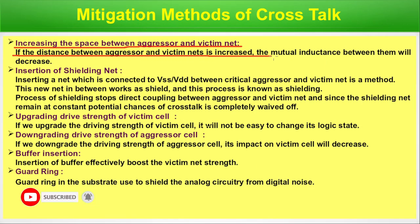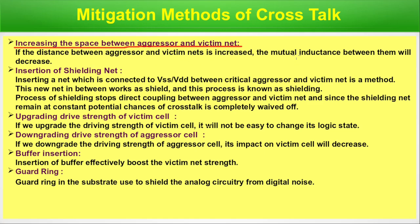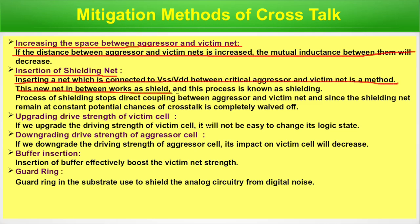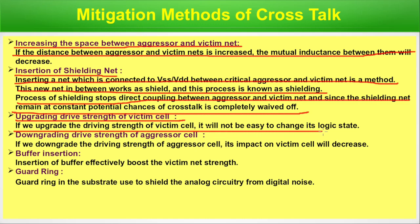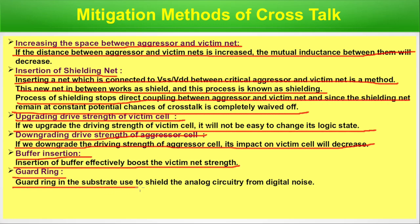Mitigation methods of crosstalk: (1) Increasing the space between aggressor and victim nets — greater distance decreases mutual capacitance between them. (2) Insertion of a shielding net connected to VSS or VDD between critical aggressor and victim nets — this net acts as a shield, stopping direct coupling and keeping the net at constant potential, completely eliminating crosstalk. (3) Upgrading drive strength of the victim cell — makes it harder to change its logic state. (4) Downgrading drive strength of the aggressor cell — decreases its impact. (5) Buffer insertion — effectively boosts victim net strength. (6) Guard ring — used to shield analog circuitry from digital noise in the substrate.